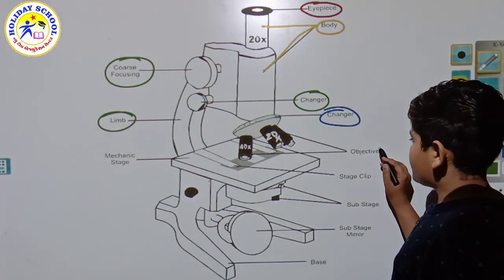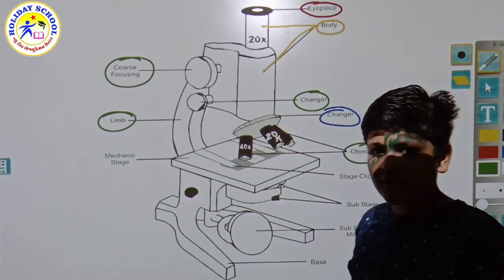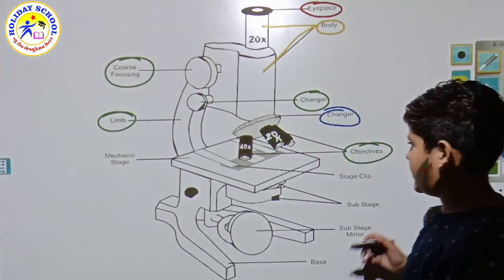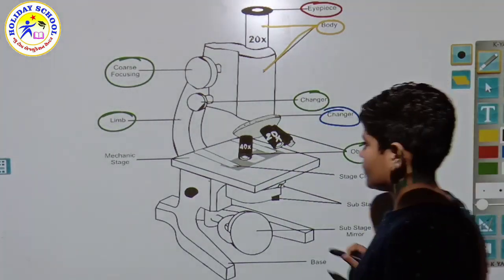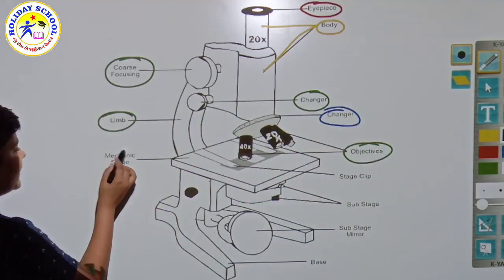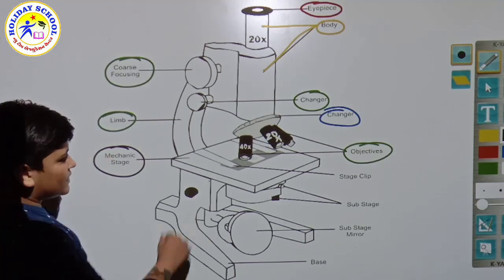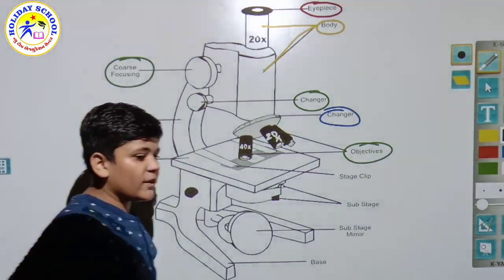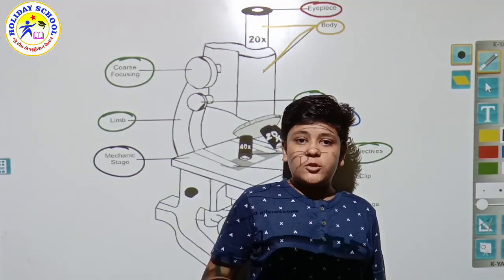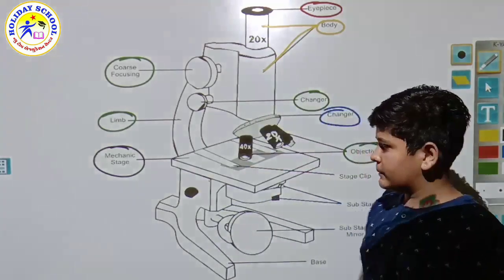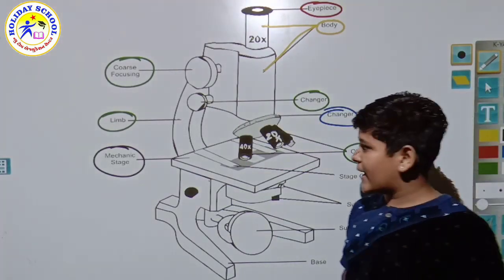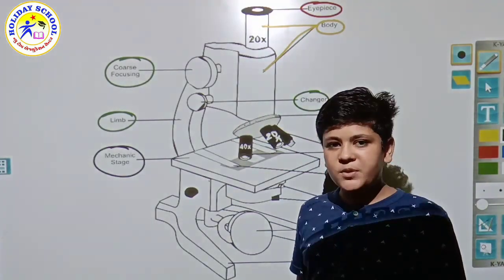After that, objectives - these are the lenses we have seen previously. After that, the stage - where we put our object to see it zoomed, like 100 times or 40 times or 20 times bigger.